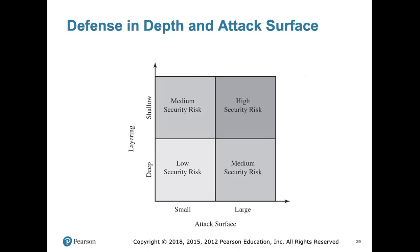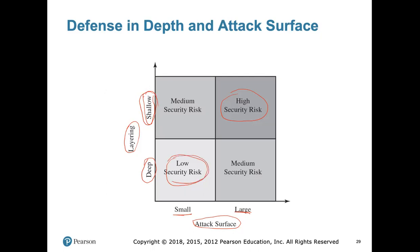The attack surface may be large or small, and our security countermeasures may have no layering, shallow layering, or deep layering. The worst case: a large attack surface with no good layering — security risk will be very high. In contrast, when the attack surface is small and/or the system is secured with multi-layer or deep countermeasures, the amount of risk in our system will be low.